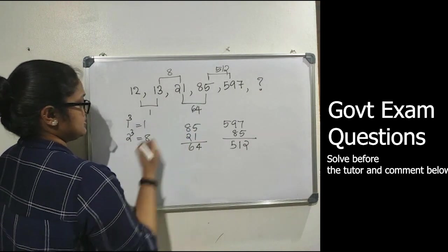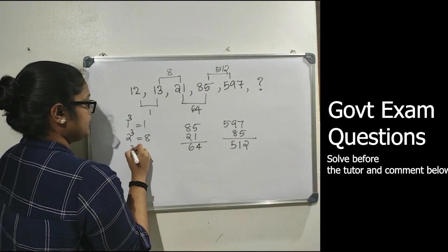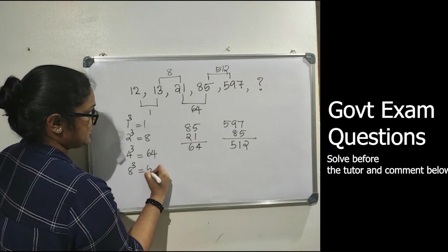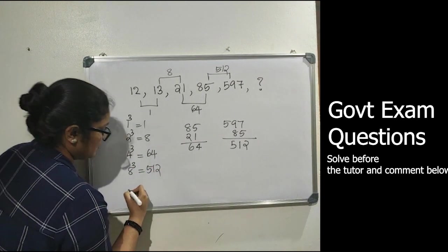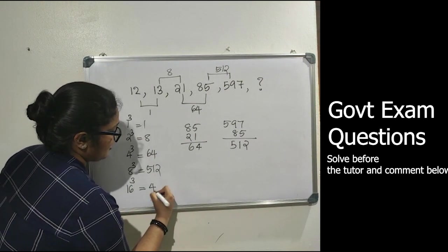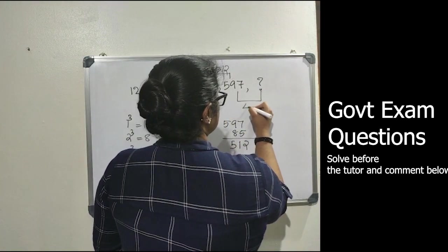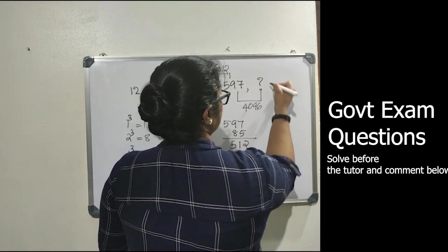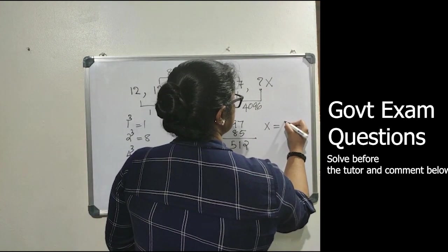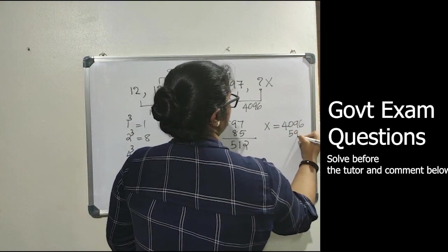Next is 4 cubed equals 64, then 8 cubed equals 512. So definitely next one will be 16 cubed, and that is 4096. So 597 plus 4096 will be our unknown value. So x equals 4096 plus 597, that is 4693.